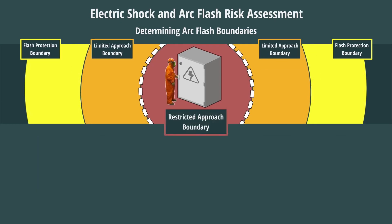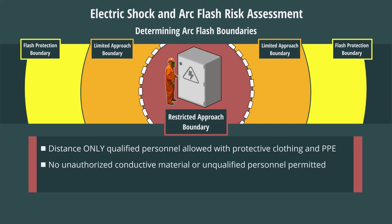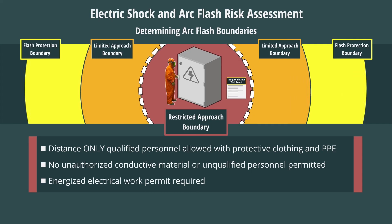The third is the restricted approach. This is the distance at which only qualified personnel are allowed, with appropriate protective clothing and other PPE for the associated hazard. No unauthorized conductive material or unqualified personnel are permitted to cross a restricted boundary. Further, a documented, management-approved plan, known as an Energized Electrical Work Permit, is required to enter a restricted space.